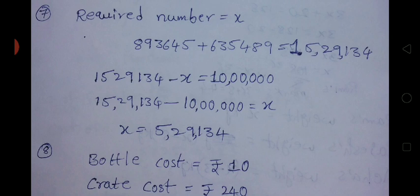Next question: 10 lakhs is obtained when a number is subtracted from the sum of 8 lakhs 93,645 and 6 lakhs 35,489. Find the number. The required number is unknown, so let it be X. The sum of the two given numbers is 15,29,134.